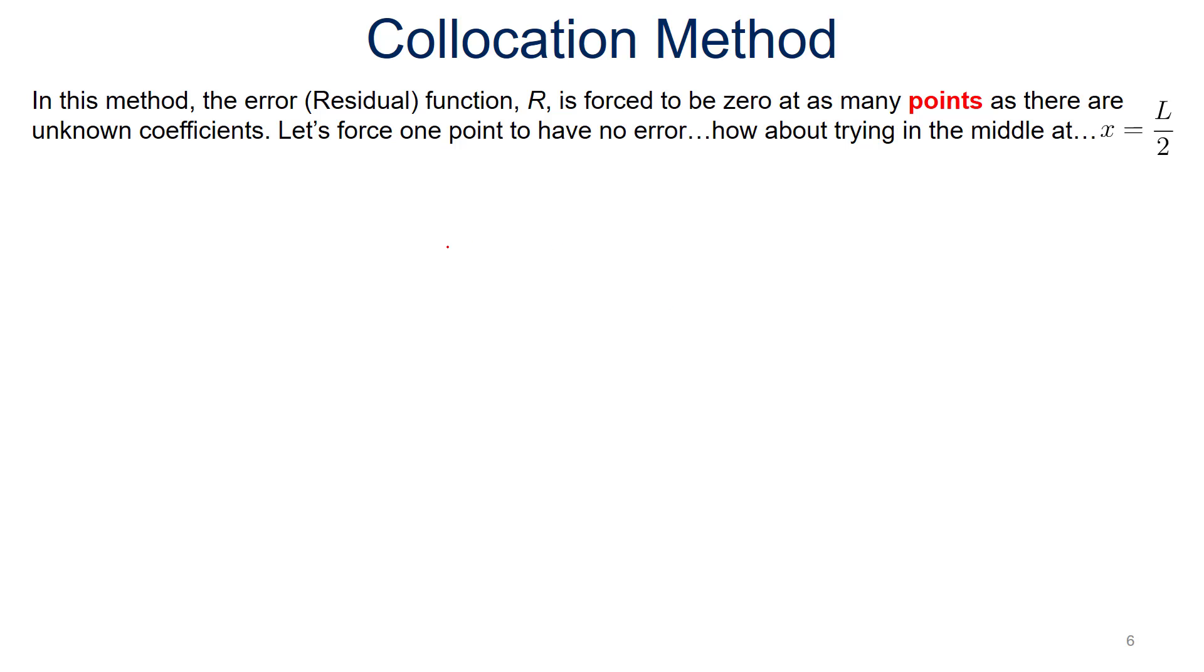In this method, the error residual function R is forced to be zero at as many points as there are unknown coefficients. Let's force one point to have no error, and let's do it right at the middle. The reason we're doing one point is because we have one unknown coefficient, that's A. That's what we're trying to find out here. We're only looking to force it to be zero at this particular point.